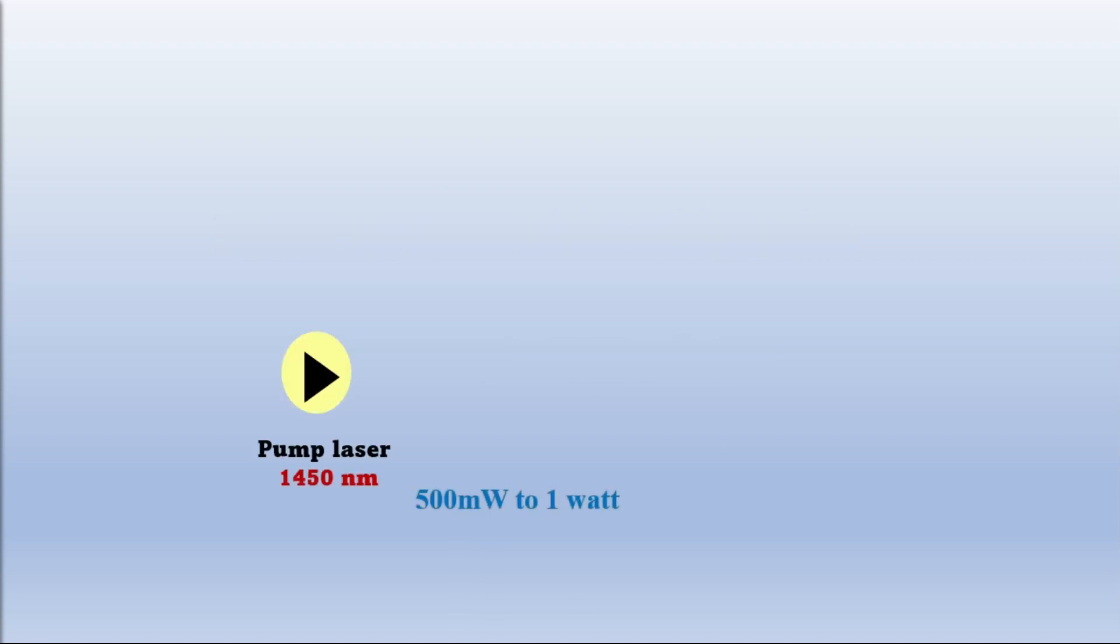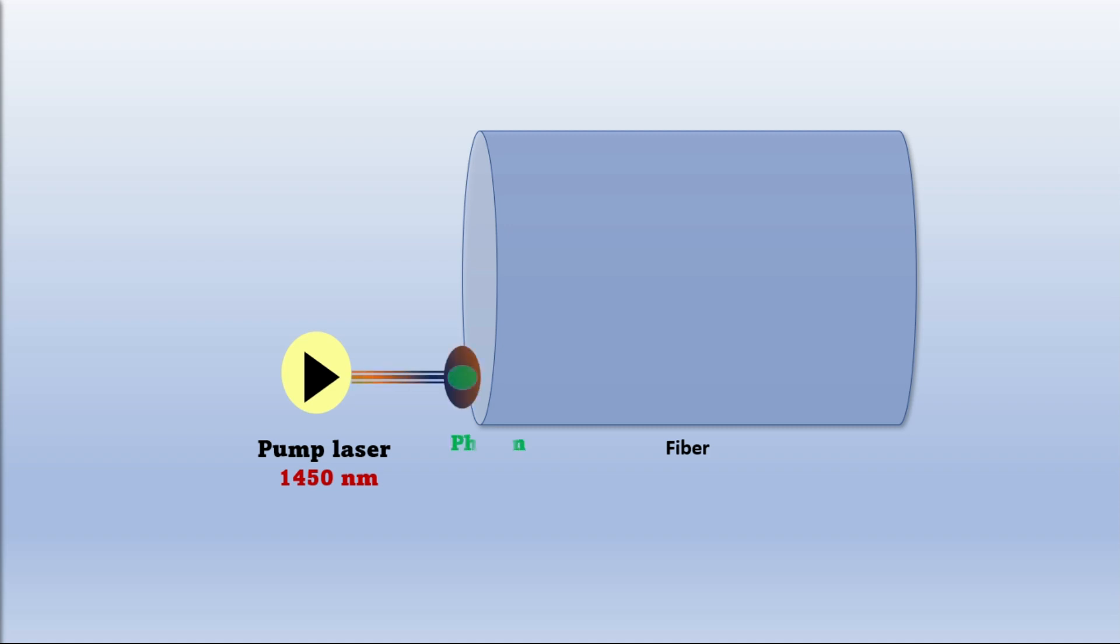How is this effect used in Raman amplifier? To use this effect we use a pump laser with high power, 500 milliwatt to 1 watt, with a wavelength. Here we'll take an example with 1450 nanometers as pump wavelength. We can use other wavelengths also in the pump wavelength.